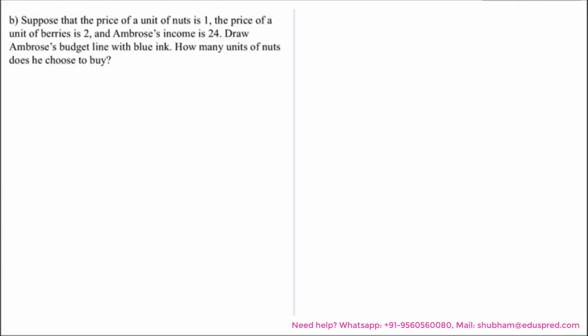In this video, we would be solving this question which says suppose that the price of units of nuts is 1 and the price of units of berries is 2, and Ambrose's income is 24. Draw Ambrose's budget line with blue ink. How many units of nuts does he choose to buy?